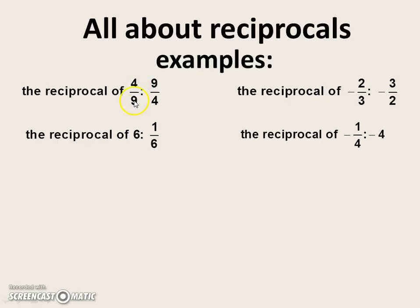The reciprocal of four-ninths is nine-fourths. The reciprocal of negative two-thirds is negative three-halves. The reciprocal of six is one-sixth. The reciprocal of negative one-fourth is negative four.